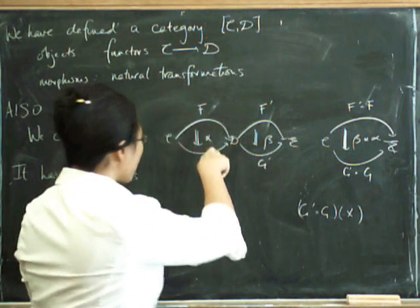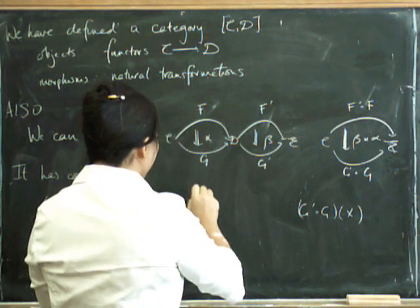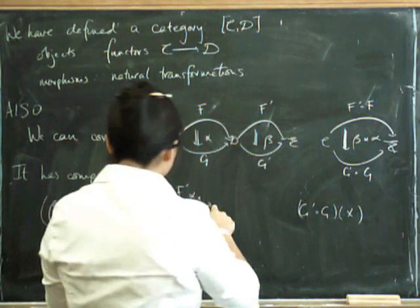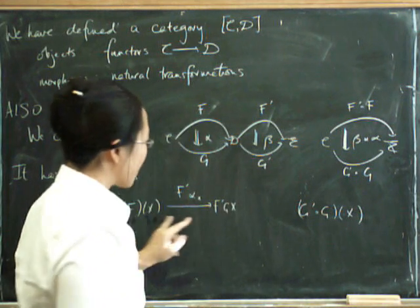Now, we've got alpha from F of X to G of X. So if we do F prime on alpha of X, that takes us to F prime of G of X. Right?